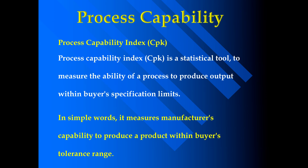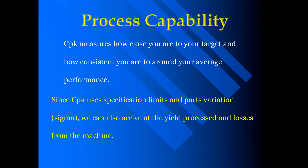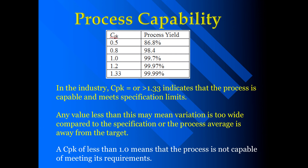Process capability index: it is a statistical tool to measure the ability of a process to produce output within the specification limits. In simple words, it measures a manufacturer's capability to produce a product within the tolerance range. CPK measures how close you are to your target and how consistent you are around your average performance. A CPK value of 1.33 indicates that the process is capable and meets the specification. Any value less than this means variation is too wide compared to the specification.